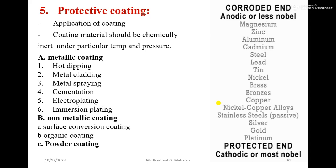Good morning friends. Next is methods of corrosion control — the last part of that unit is protective coating. We are going to see three types of coatings: first is metallic coating, second is non-metallic coating, and third is powder coating.